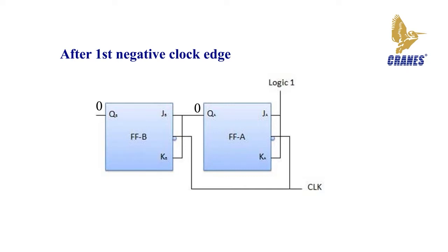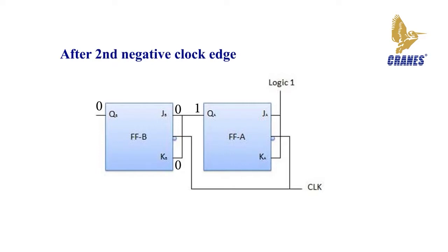After the first negative clock edge is applied, flip-flop A will toggle and QA will change from 0 to 1. But at the instant of application of the negative clock edge, QA, JB, and KB will be equal to 0, so flip-flop B will not change its state and QB will remain 0. Hence QB and QA will be equal to 0 1 after the first clock pulse.